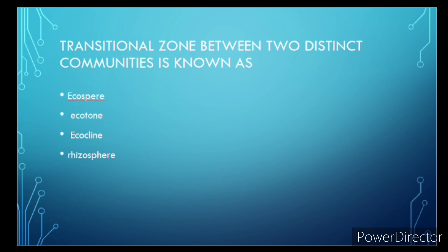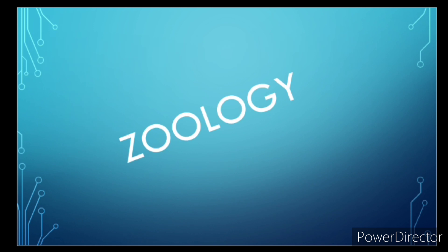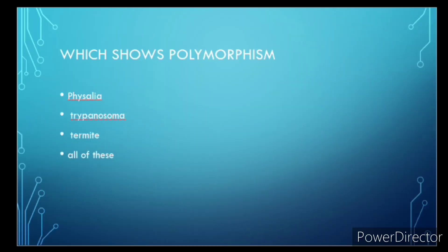Transitional zone between two distinct communities is known as? Correct answer is ecotone. Now we have completed botany previous year questions and we will start with zoological questions.